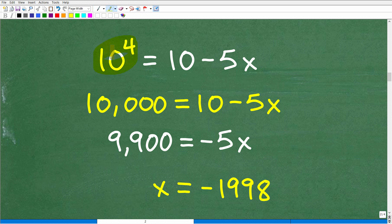So let's go ahead and solve this equation. All right, so 10 to the 4th power is 10 times itself, 4 times. So 10 times 10 times 10 times 10 is 10,000. That's going to be equal to 10 minus 5x. Subtract 10 from both sides of the equation, I get 9,900, and that's equal to negative 5x. Divide both sides of the equation by negative 5, and you get our lovely answer here, which is negative 1998.